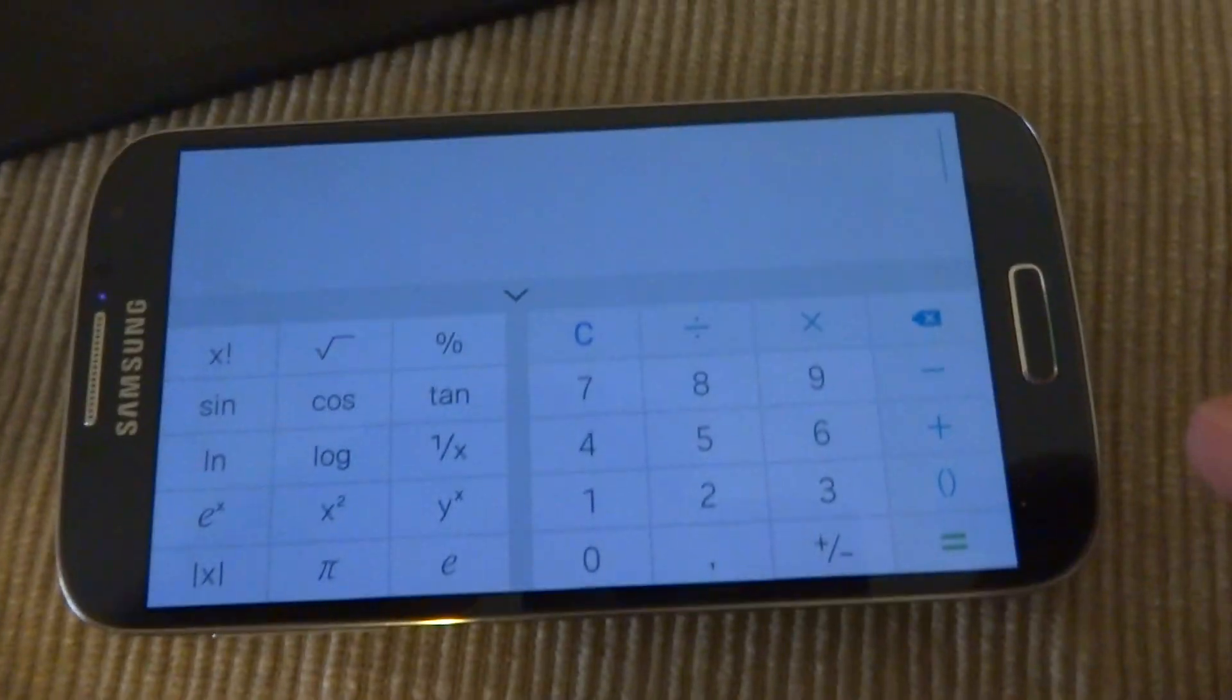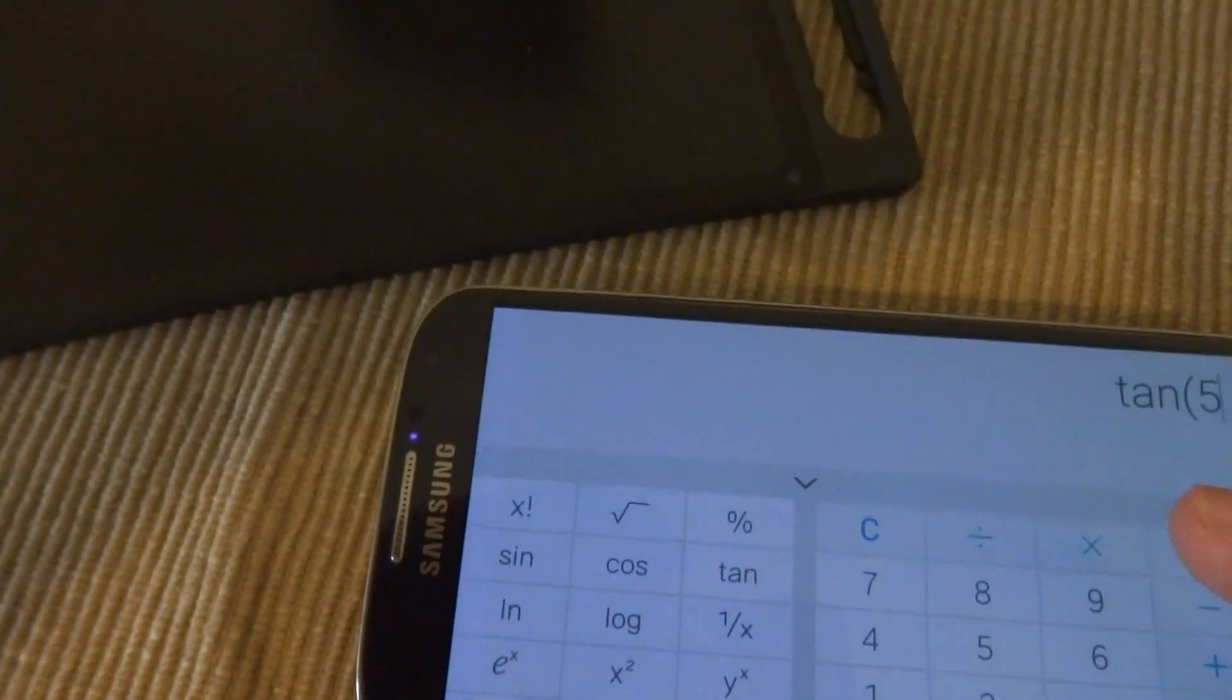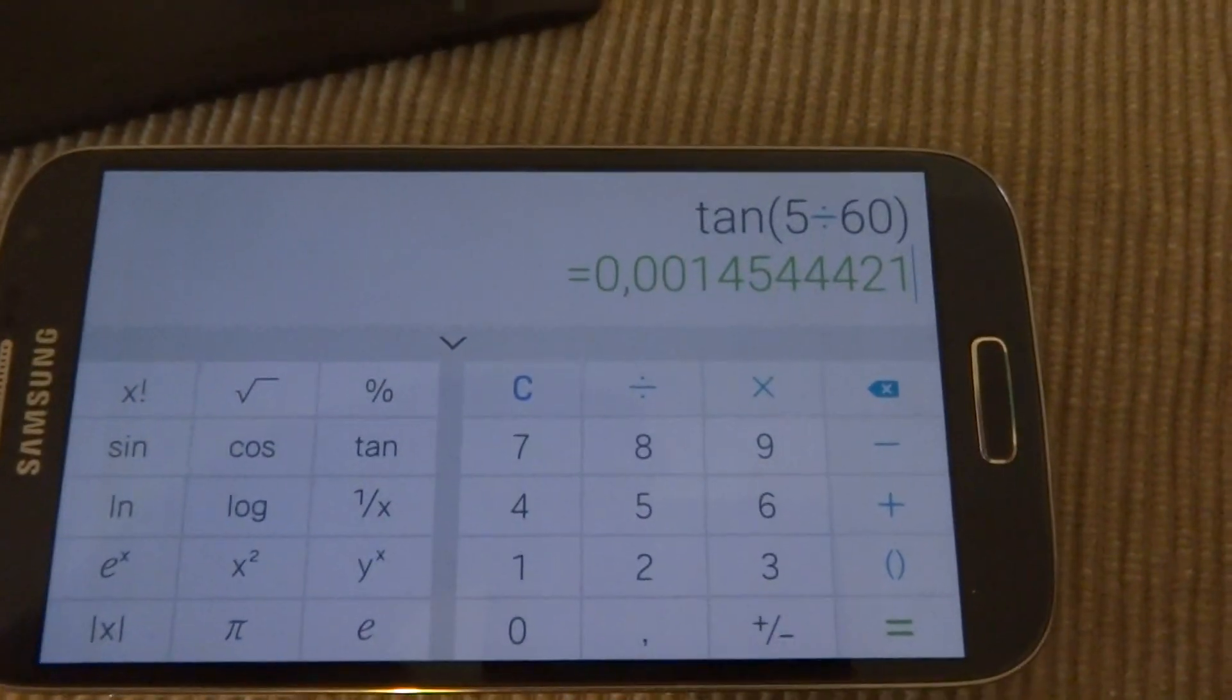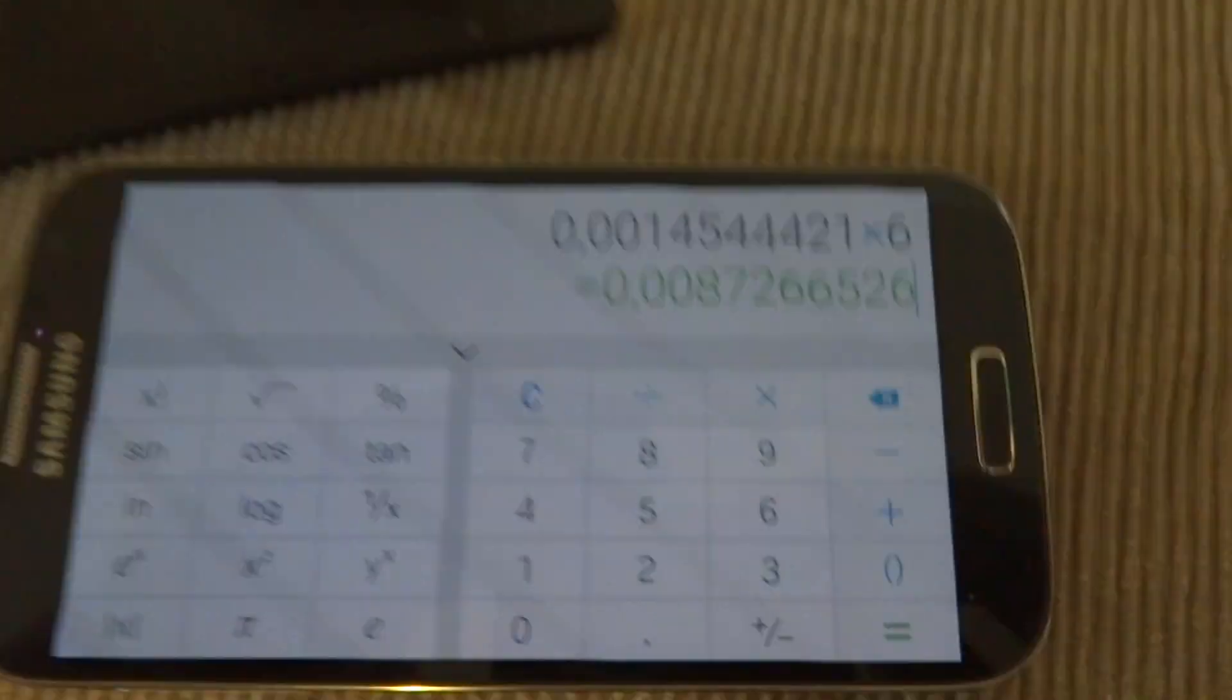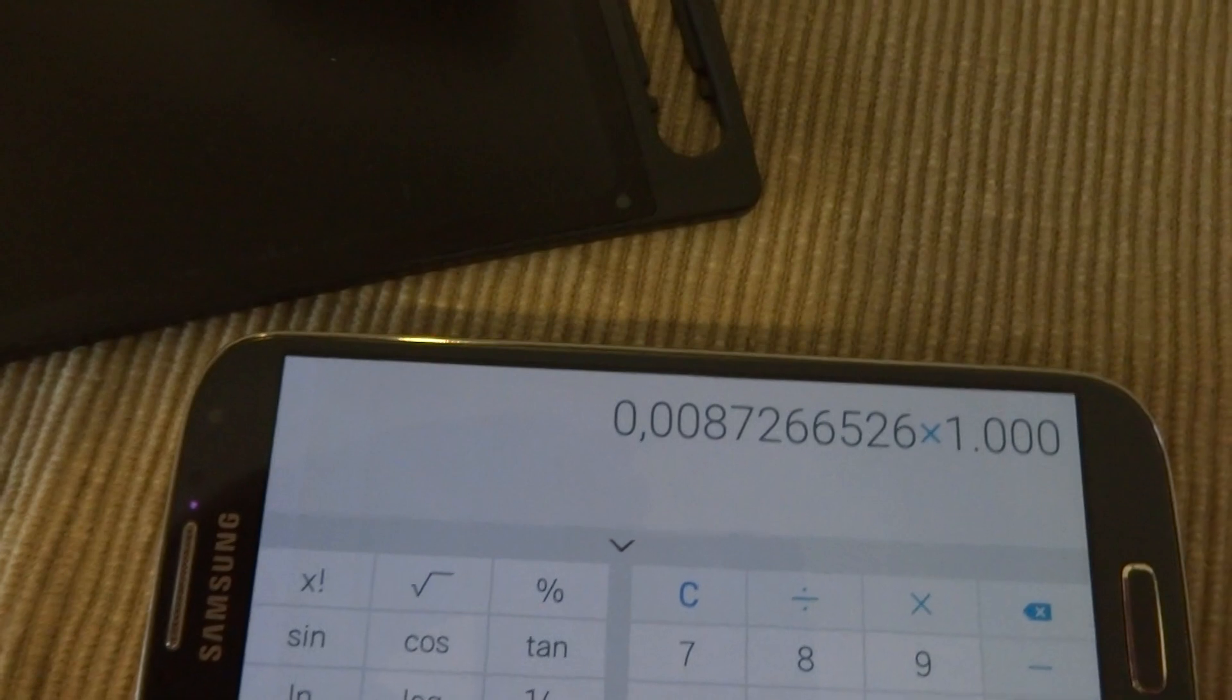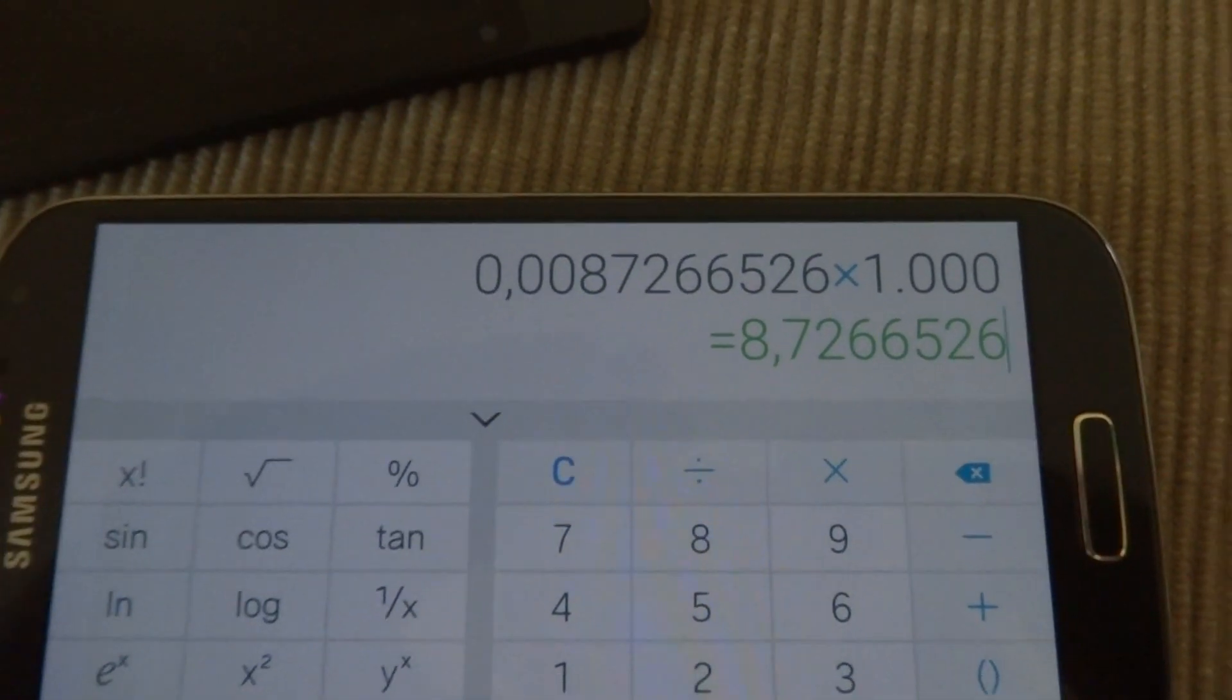But then what about the total size of the letter? That should be about five minutes of angle. So that's what we can do. Let's do the same thing. We'll do tangent, 5 divided by 60, equals that, and then we'll times that by 6 meters because that's how far we're looking. So we'll times that by a thousand just to make it a little easier to read, and that'll give us millimeters. 8.72 millimeters.